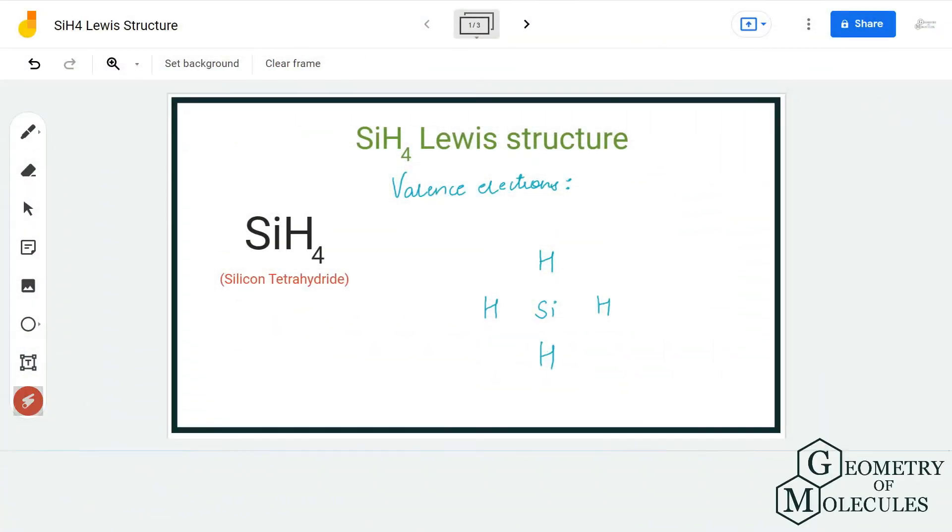Hi guys, welcome back to our channel. In today's video, we are going to help you determine the Lewis structure for SiH4. It is the chemical formula for silicon tetrahydride, and to find out its Lewis structure we will first determine the total number of valence electrons for this molecule.